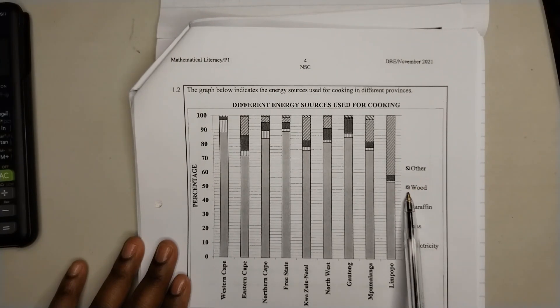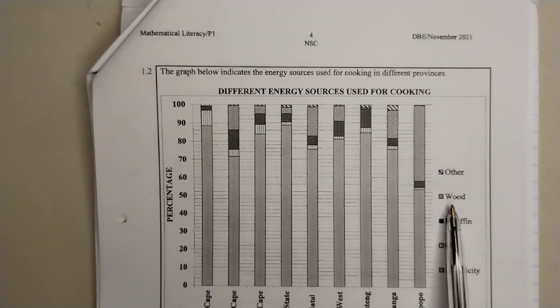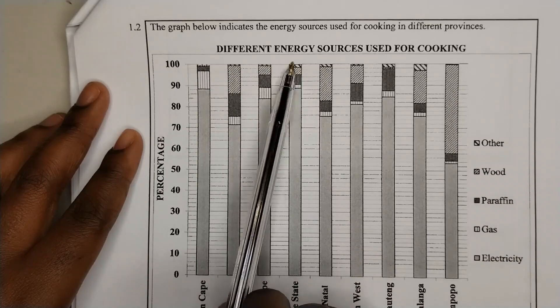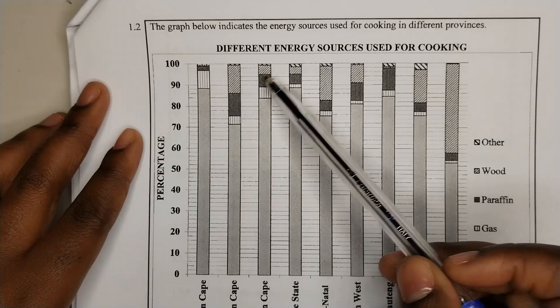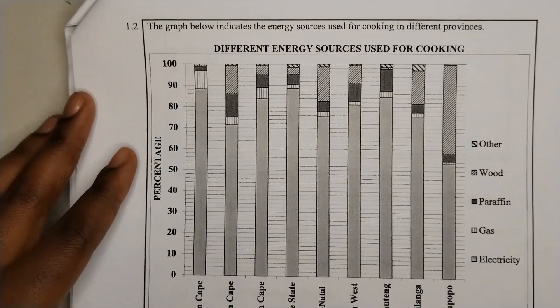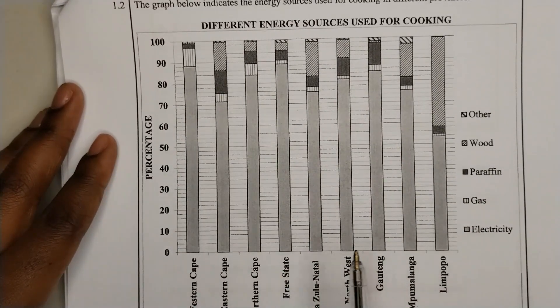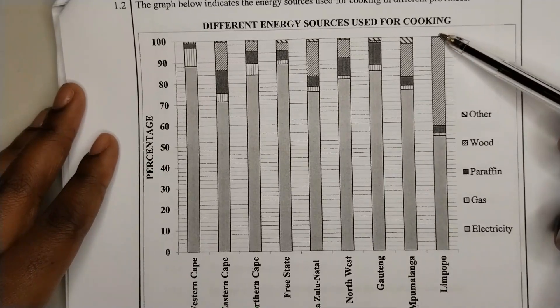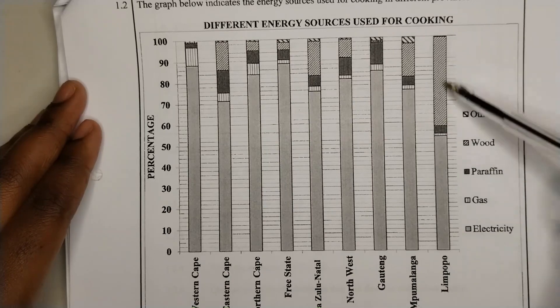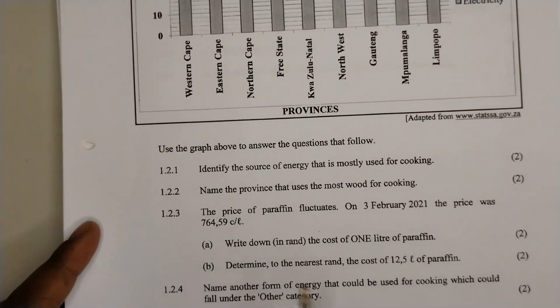Question 1.2.2: Name the province that uses the most wood for cooking. We go to the graph and look for the province using the most wood. The key for wood shows diagonal lines going to the left — not the ones going to the right, so please don't make that mistake. Looking at the graph, we can see that Limpopo uses the most wood, because it has the greatest percentage of wood used.